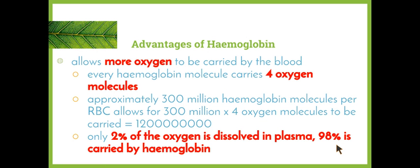So what are some advantages of hemoglobin — basically, why do we have it? The chemical equation for cellular respiration is: glucose plus oxygen gives us carbon dioxide plus water and energy. This reaction takes place in every cell, so we need glucose and oxygen to create energy. Without oxygen getting to the cells, cellular respiration can't take place and therefore energy production doesn't happen — basically everything we do requires oxygen.